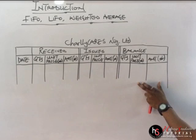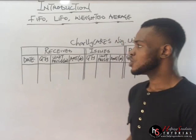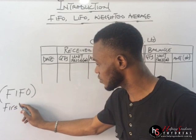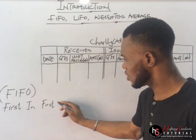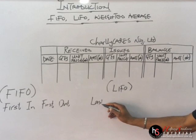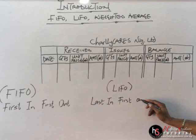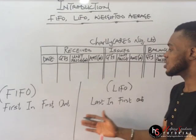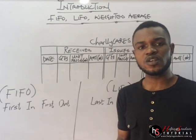Received, issues, and balance — this is the first thing you need to know. Now, how does FIFO work? Just like the name implies, FIFO simply means first in, first out. LIFO is also an acronym which means last in, first out. So take note: first in, first out; last in, first out. There are rules here — you use the rule to apply to this table when you're solving your questions.